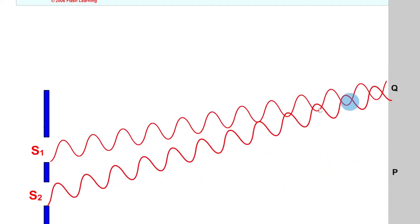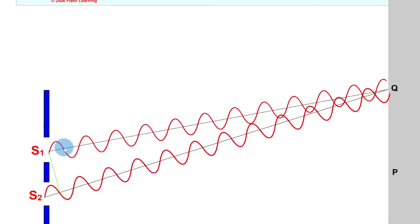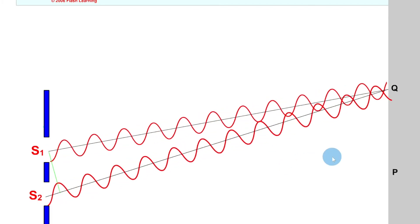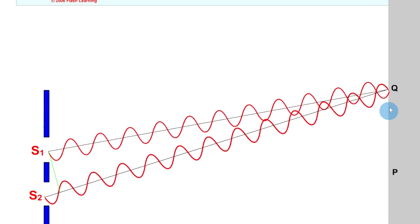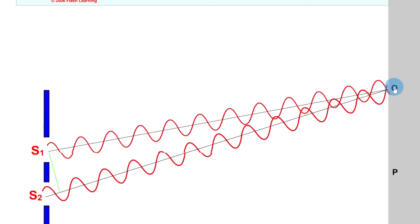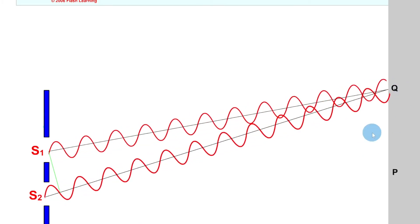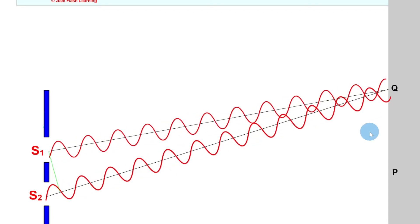At point Q, the waves from source S2 travel further than those from S1. That difference is shown by the green line. Since crest meets trough at Q, the waves are half a cycle — half a wavelength — out of phase, giving us our first minimum, or first point of destructive interference. The path difference equals lambda over two.